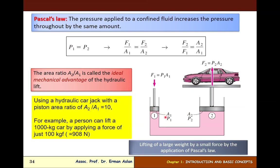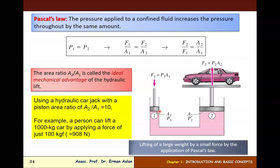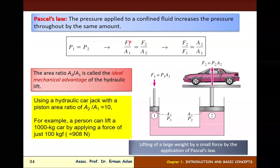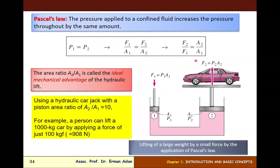If pressure P1 equals pressure P2, then P1 = F1/A1 and P2 = F2/A2. In order to get a high output force F2, we use a small input force F1. The ratio A2/A1 is called the ideal mechanical advantage of the hydraulic lift.